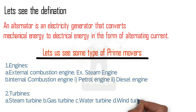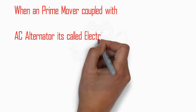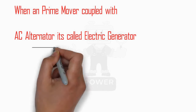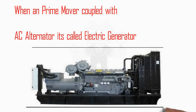The prime movers are: number one, engines — which include external combustion engines (such as the steam engine) and internal combustion engines (such as petrol and diesel engines). Number two is turbines — steam turbine, gas turbine, water turbine, and wind turbine. When a prime mover is coupled with an AC alternator, it is called an electric generator. Here you see a complete picture of an electric generator with a control panel, cables coming from the main alternator, and the engine.